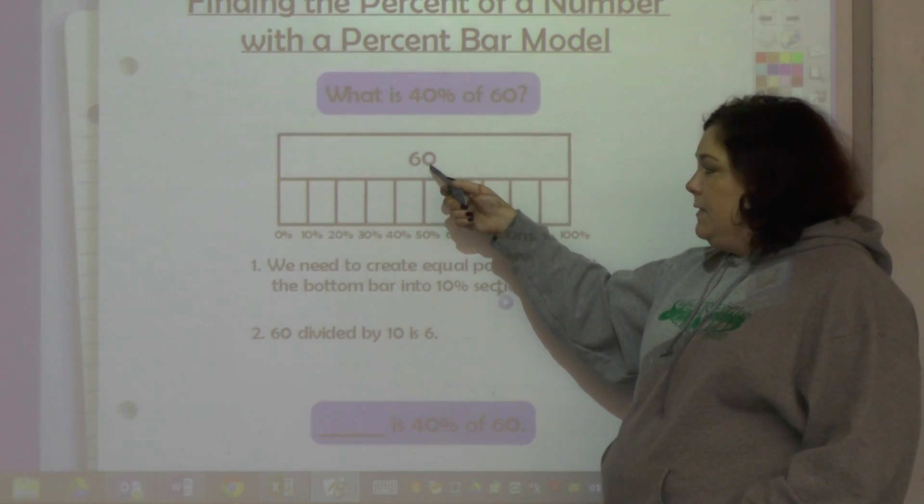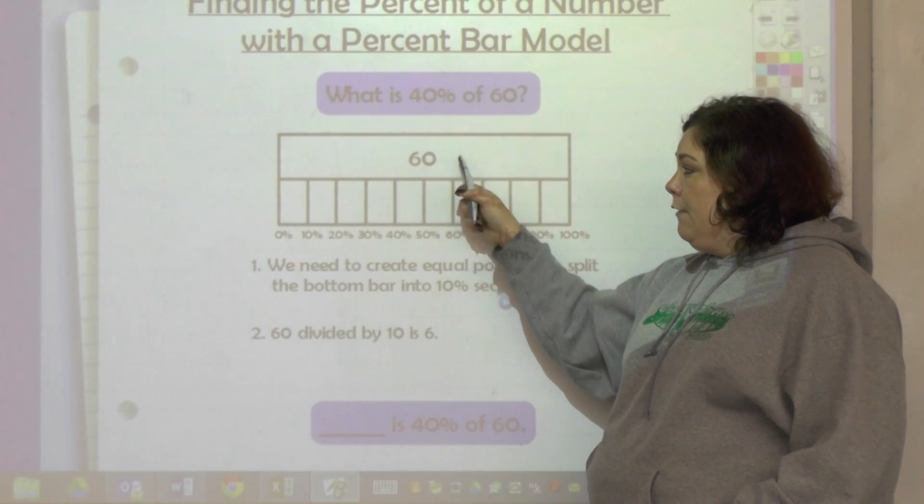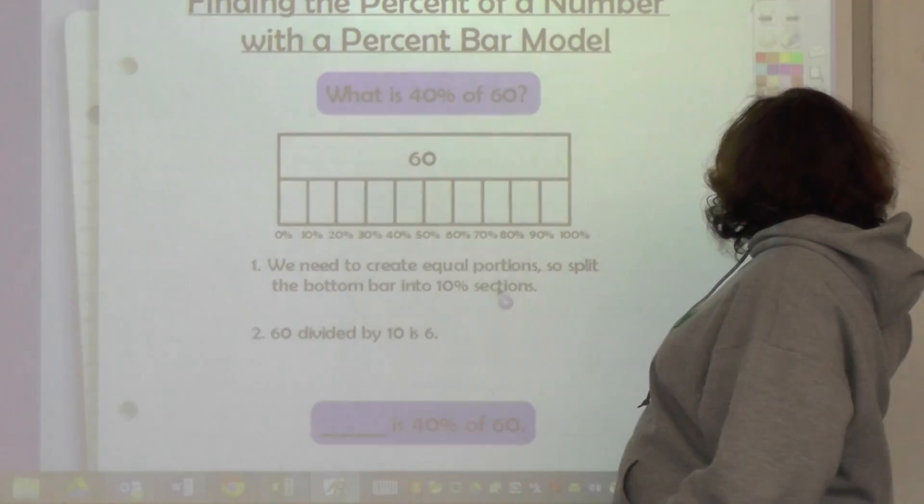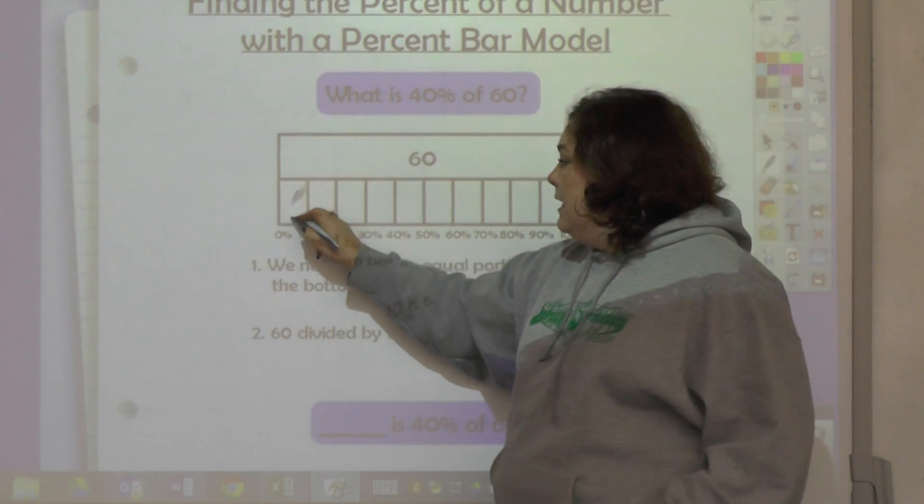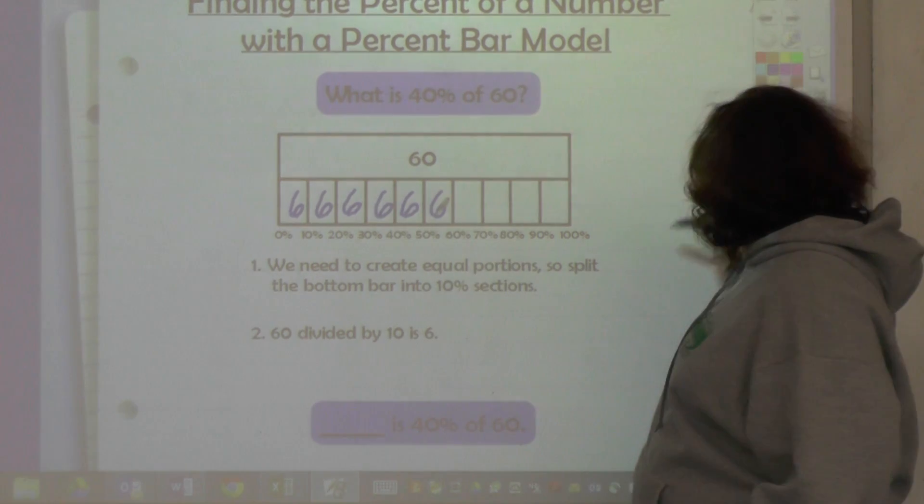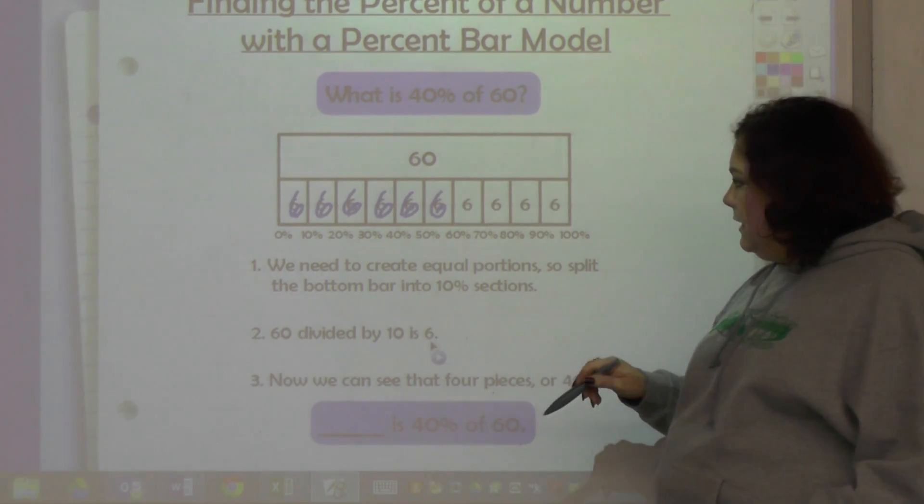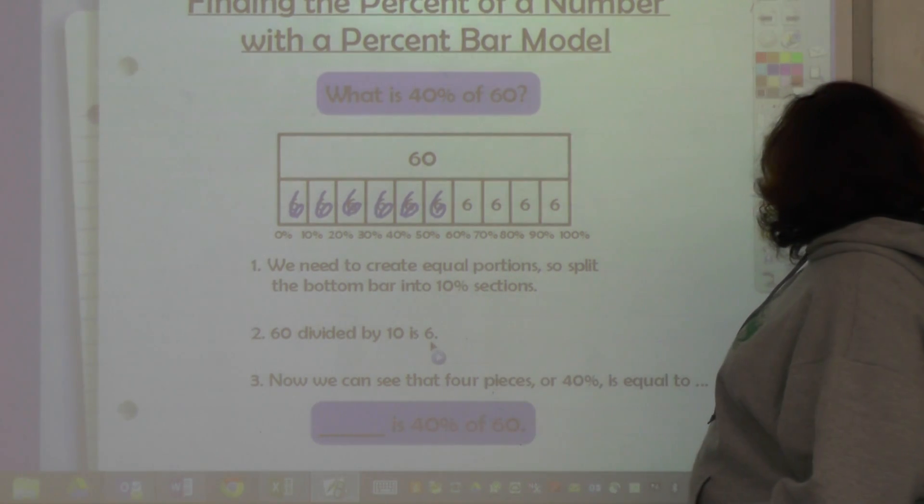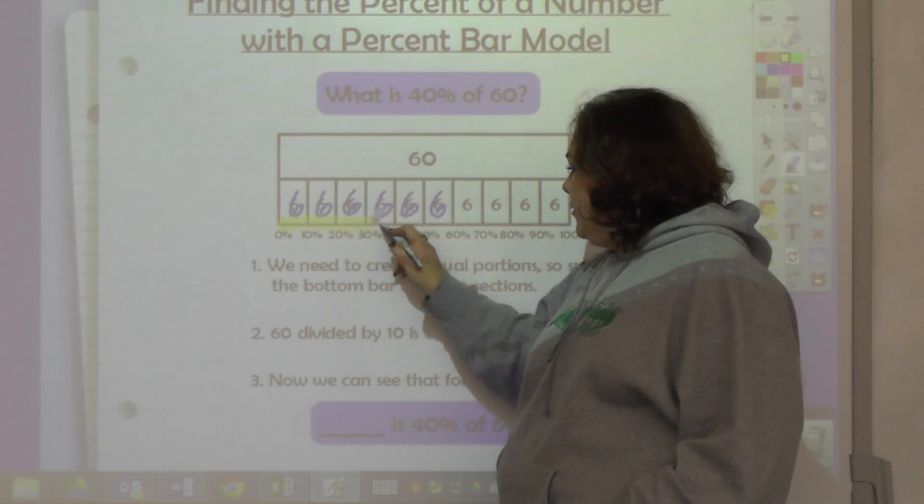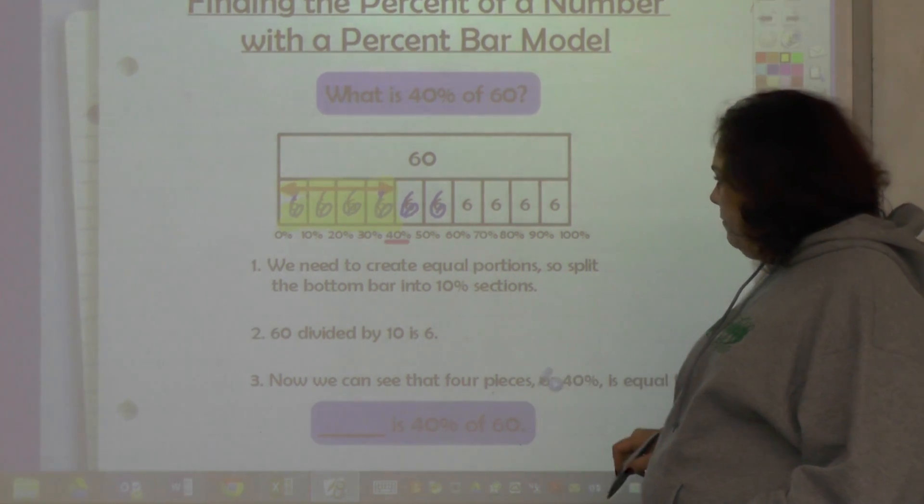And what is 10% of 60? Whenever you're finding 10% of something, you just take away one zero. We move the decimal place one place to the left, and so it would be six for each of these. And now we want four of those, so we want to go to 40%, which is right here.